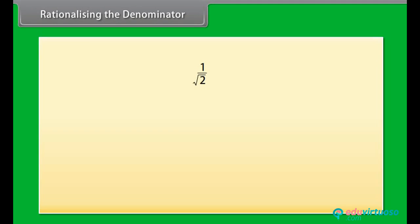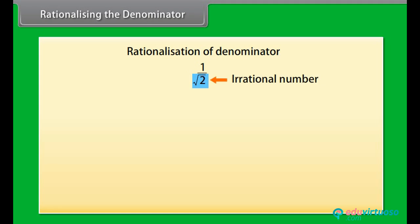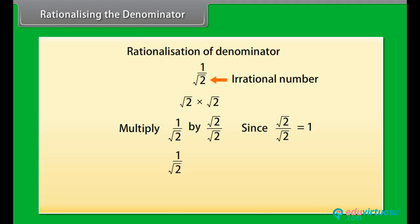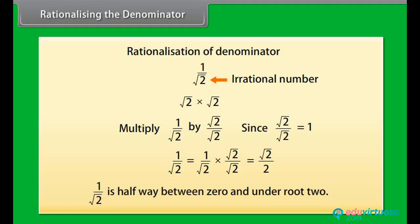Now look at this number. It is difficult to tell its position on the number line, but if we can rationalize the denominator — that is, make the denominator a rational number — then we can easily tell its position. Since √2 is irrational, multiplying it by itself makes it rational. So to rationalize, we multiply 1/√2 by √2/√2, because √2/√2 equals 1. Therefore, 1/√2 is equal to √2/2. Now it is easy to locate 1/√2 on a number line — it is halfway between 0 and √2.